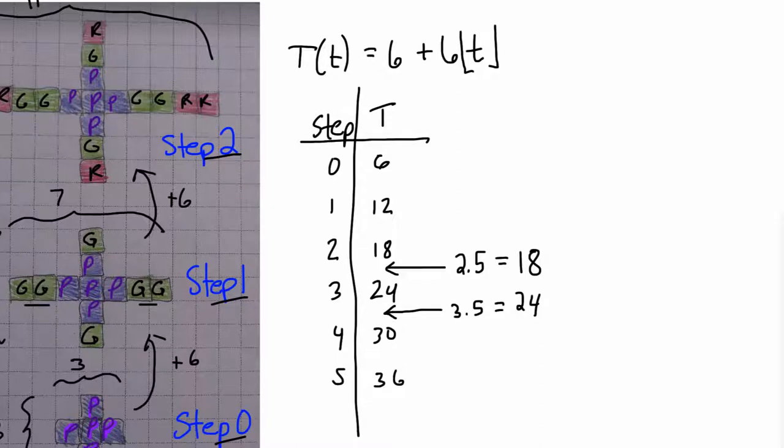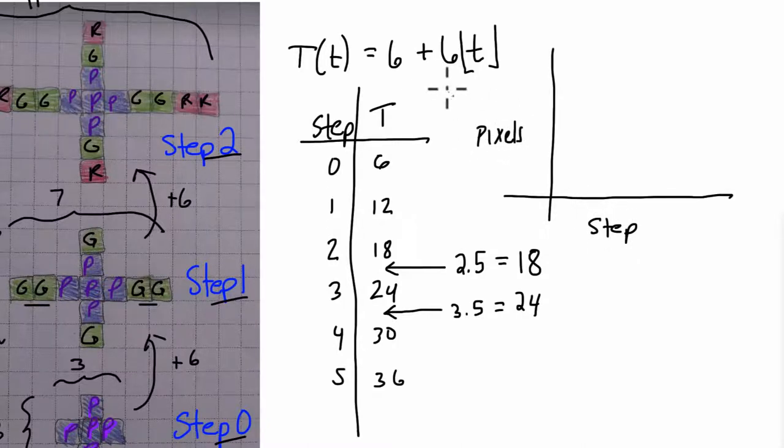So I'm going to do a little rough graph here. So on the x-axis, we have the step number, and on the y-axis, we have the number of pixels. So this thing starts off at 6. 1, 2, 3, 4, 5, 6. And I'll use a different color here. Let me just label this. 1, 2, 3, 4, 5. 6, 7, 8. I'm actually thinking, you know what, this goes up, this is 6, but I have to reach a height of 36. Let me go up by 6. It's 6, 12, 18, 24, 30, and 36.